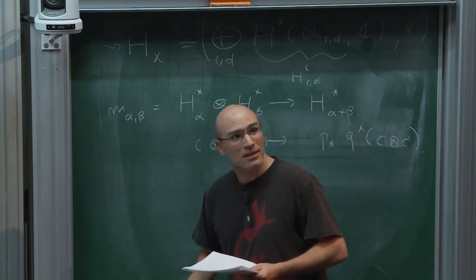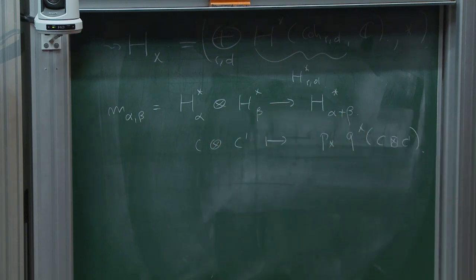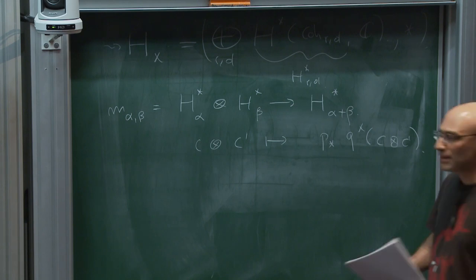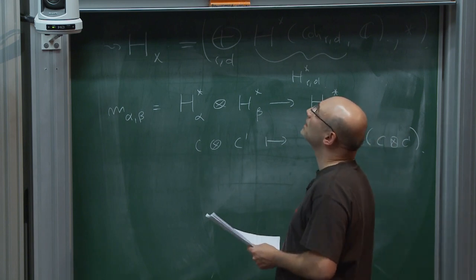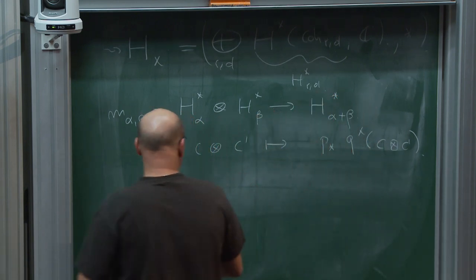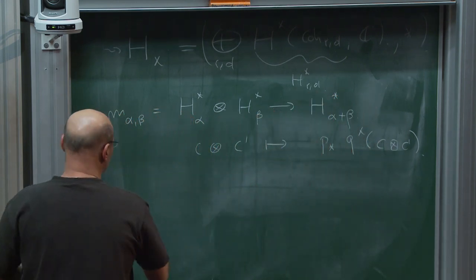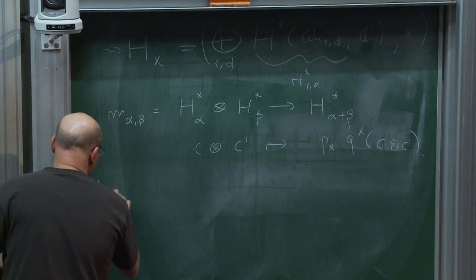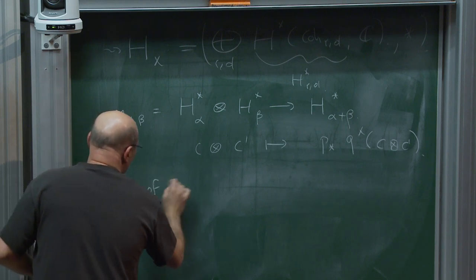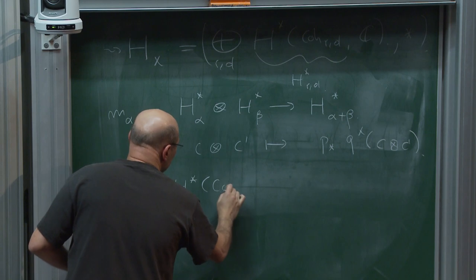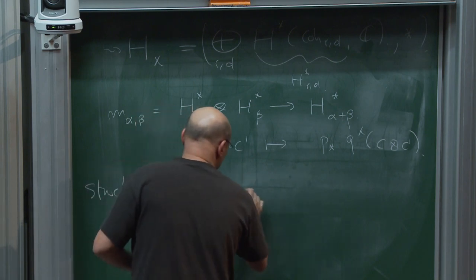There's no slope requirement — no stability or semi-stability condition on the short exact sequences. I want everything. Now let me remind you of the structure of the cohomology of Coh_α, starting with the cohomology of Bun_{R,D}.